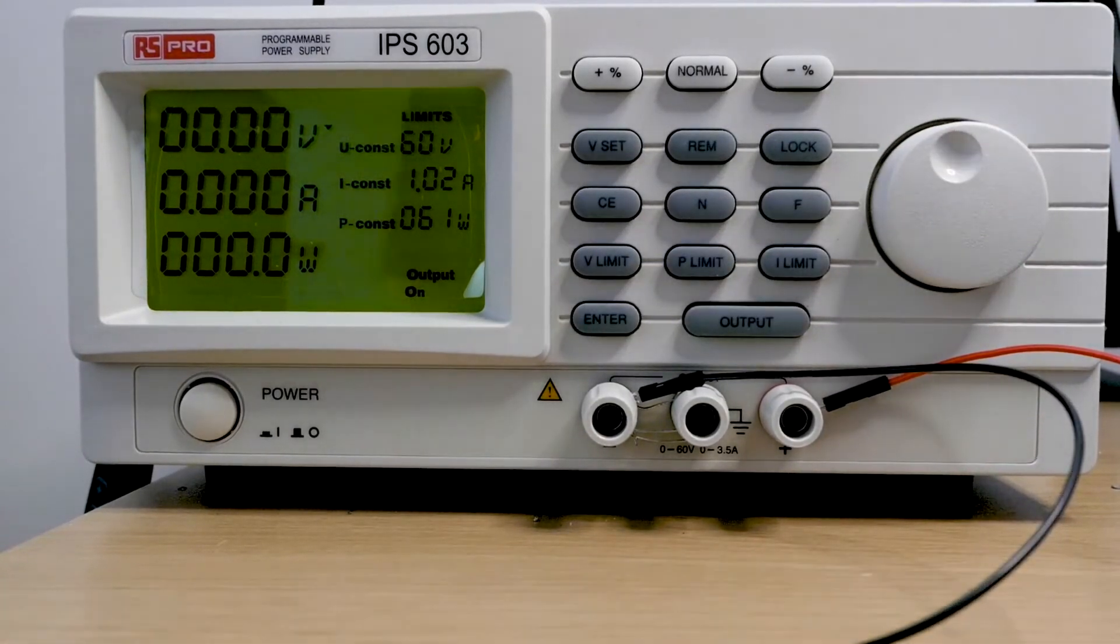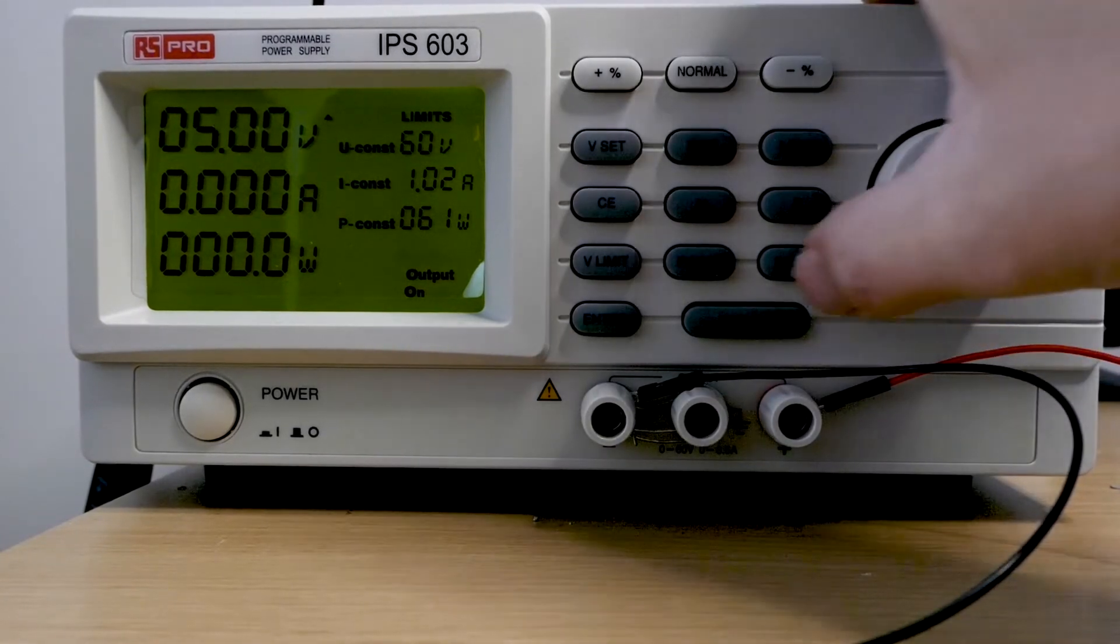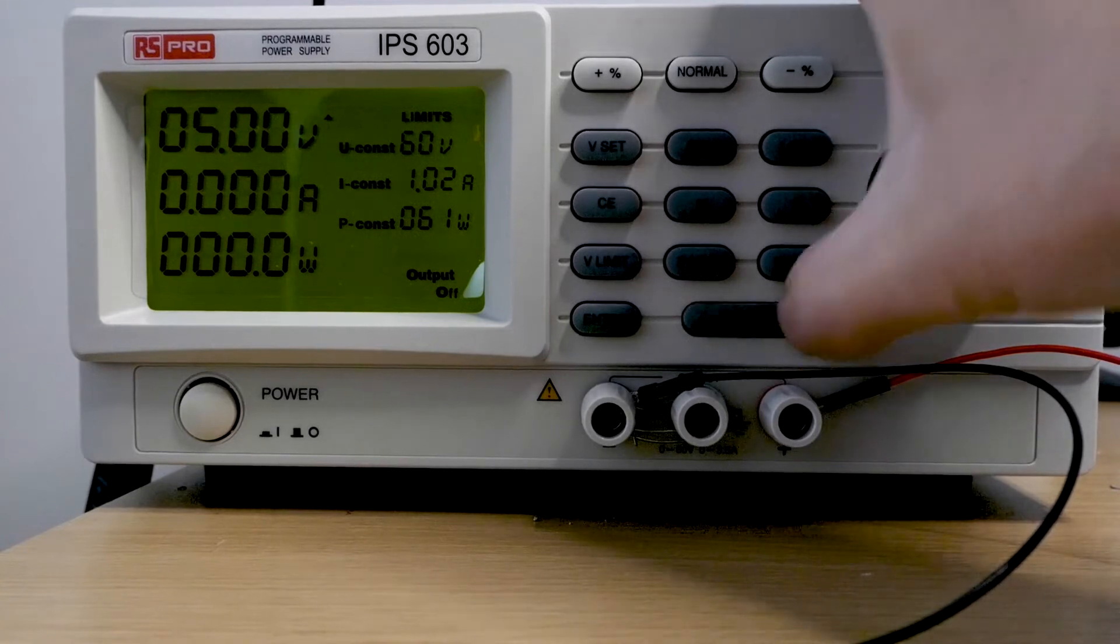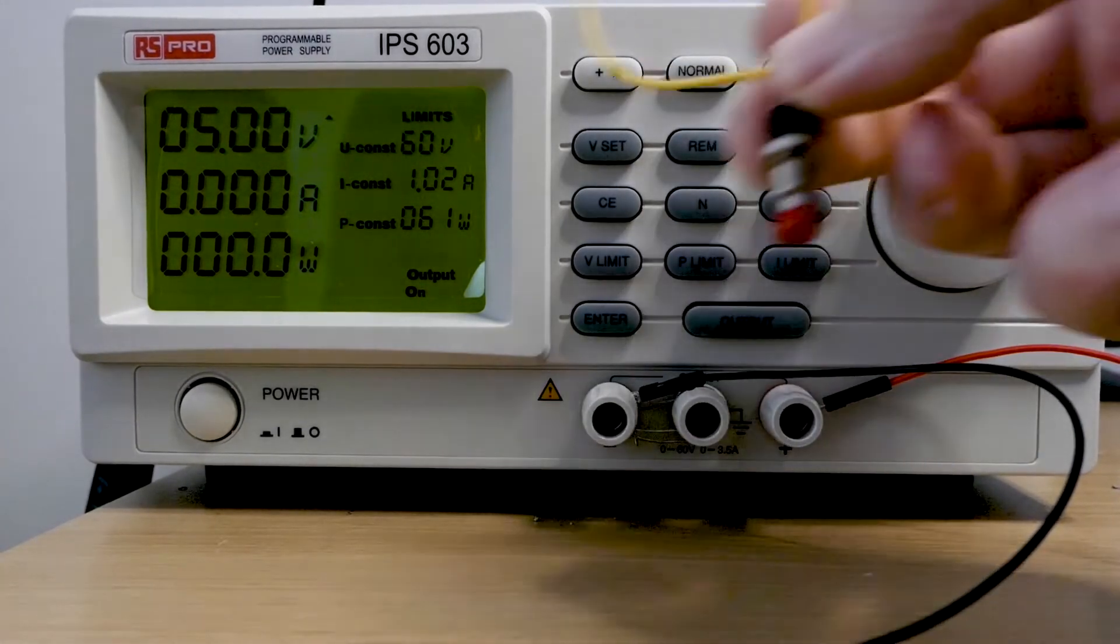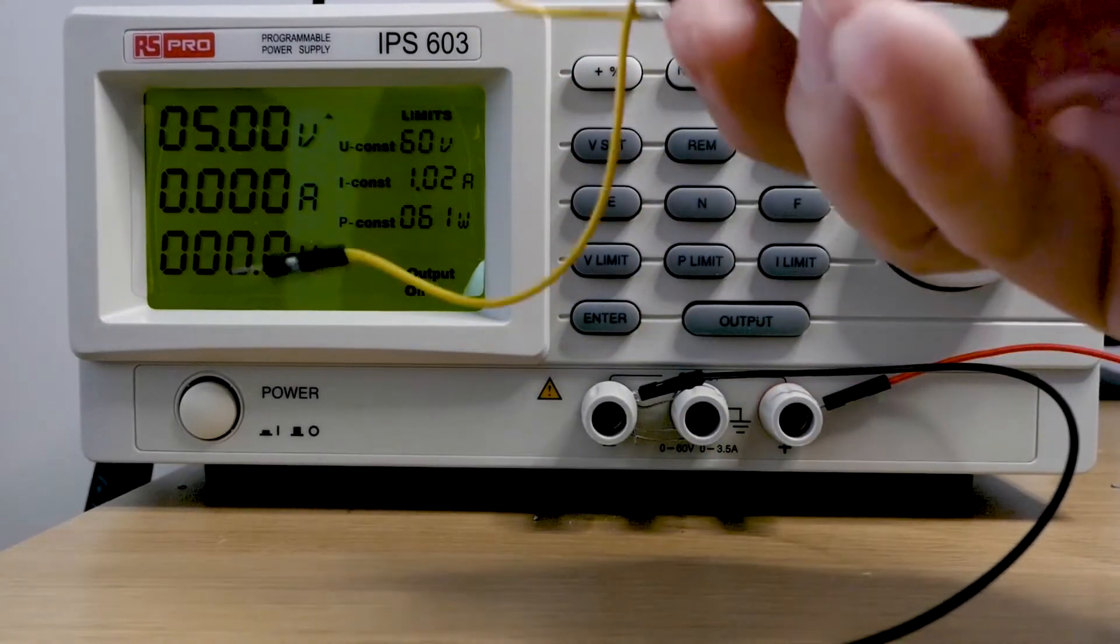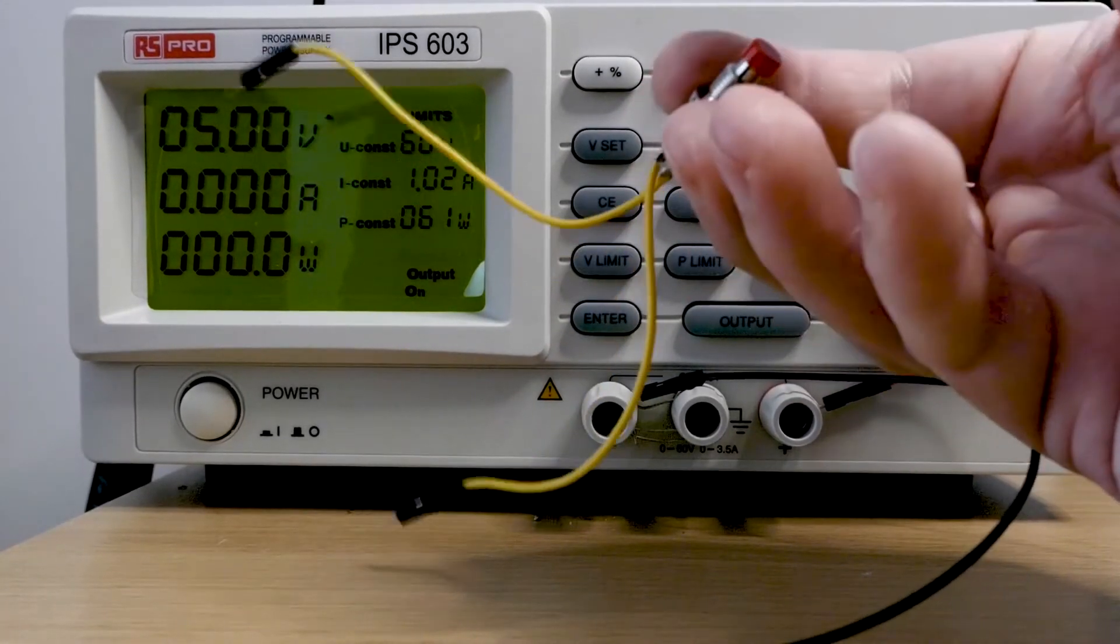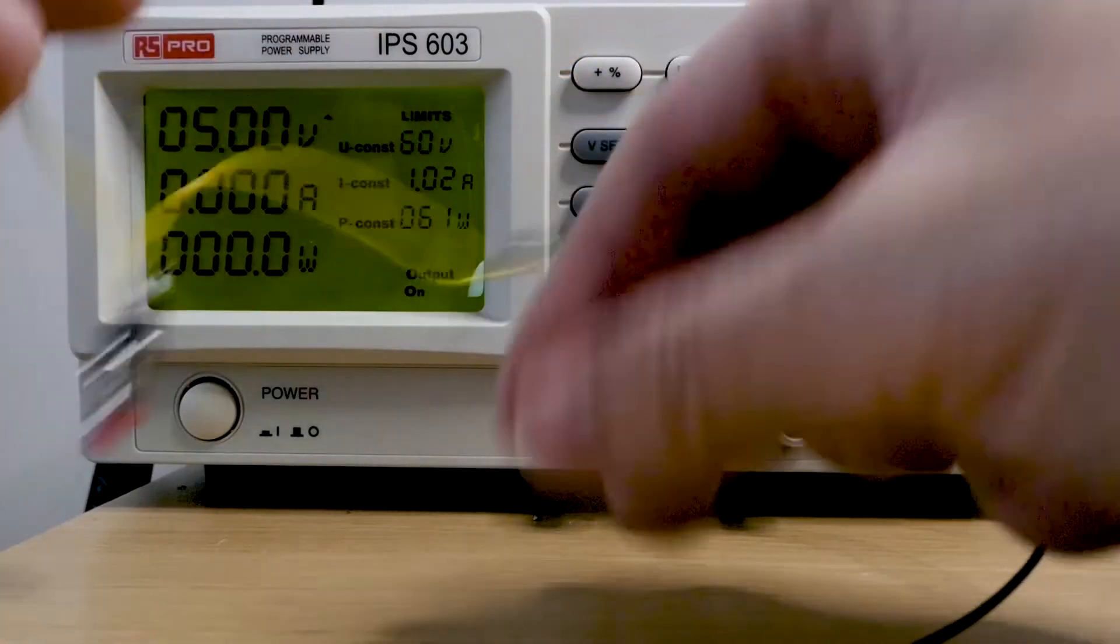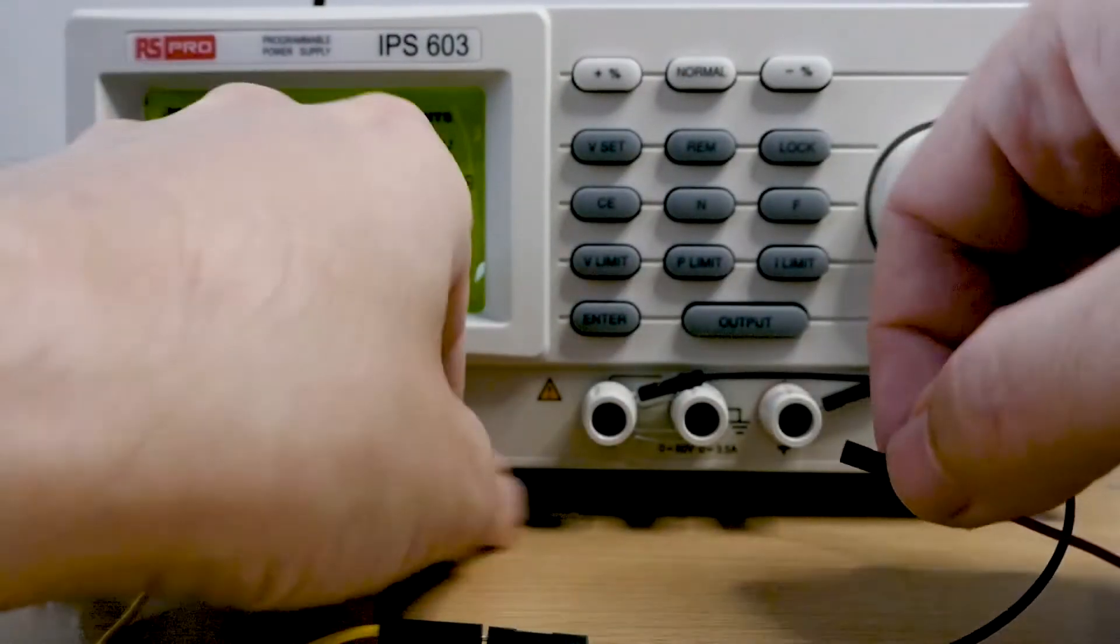To give you an extreme example of that, I'm going to set it to let's say five volts, enable that. Now I'm going to take a switch, a push button switch. Basically when I push the button in I connect the two yellow wires together and when I release it they're disconnected. If I plug this in here, this is not really recommended to do because it's not very good for the power supply.